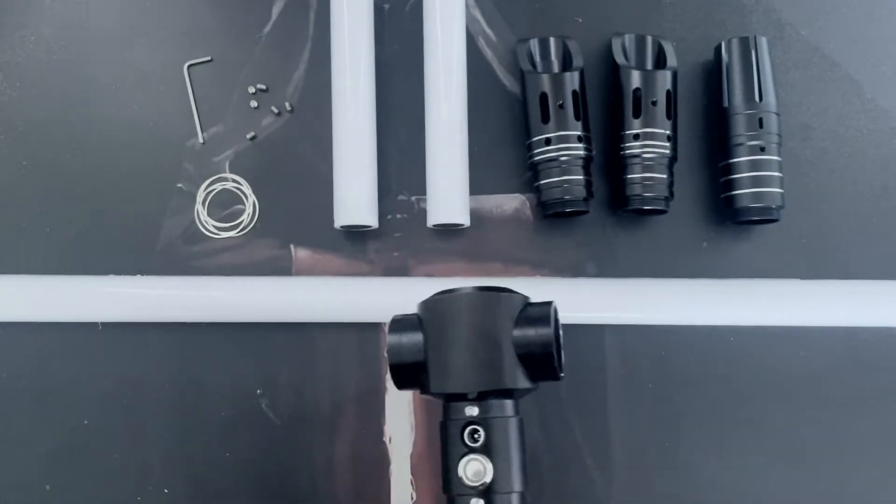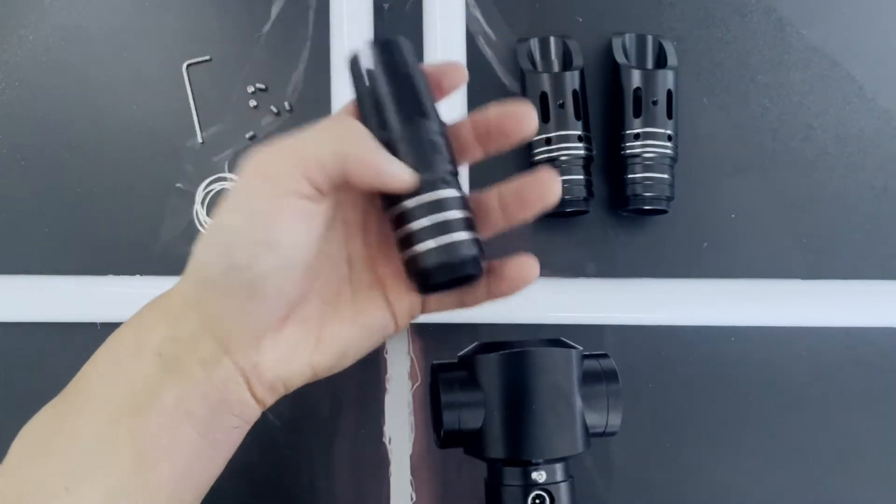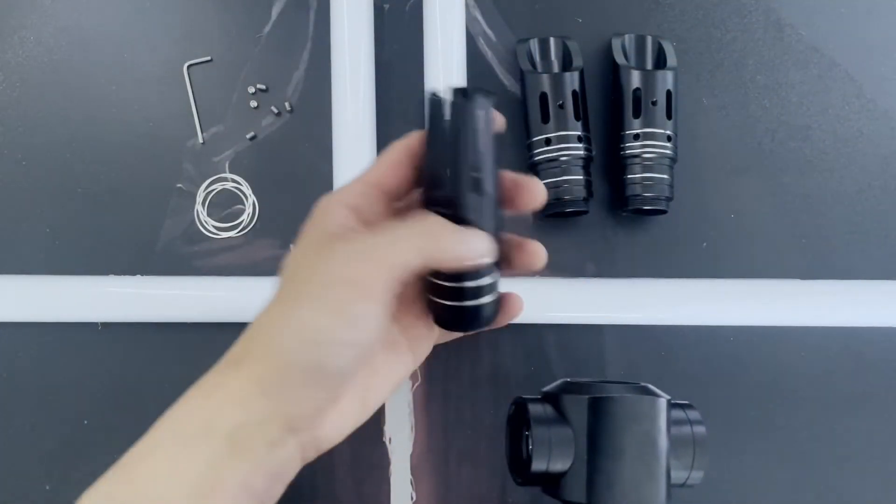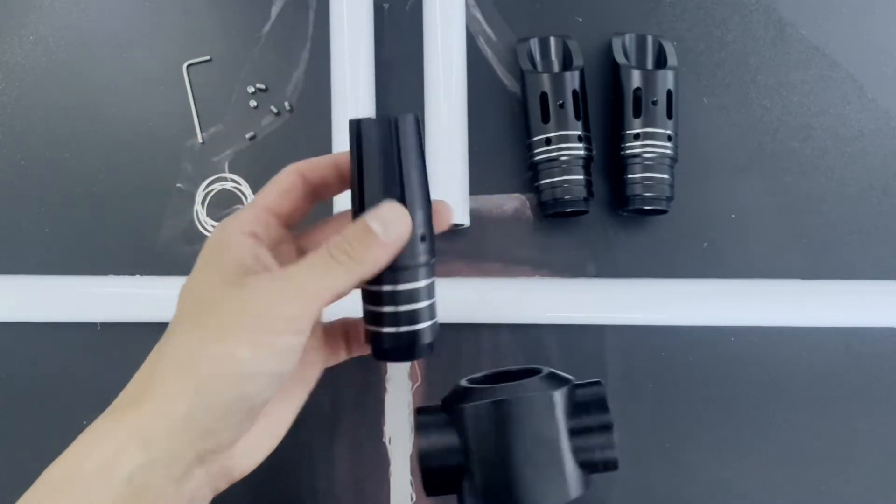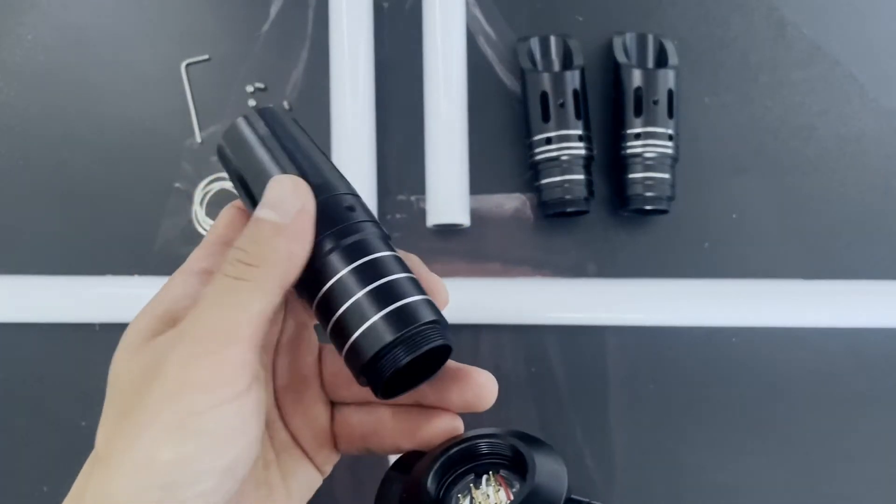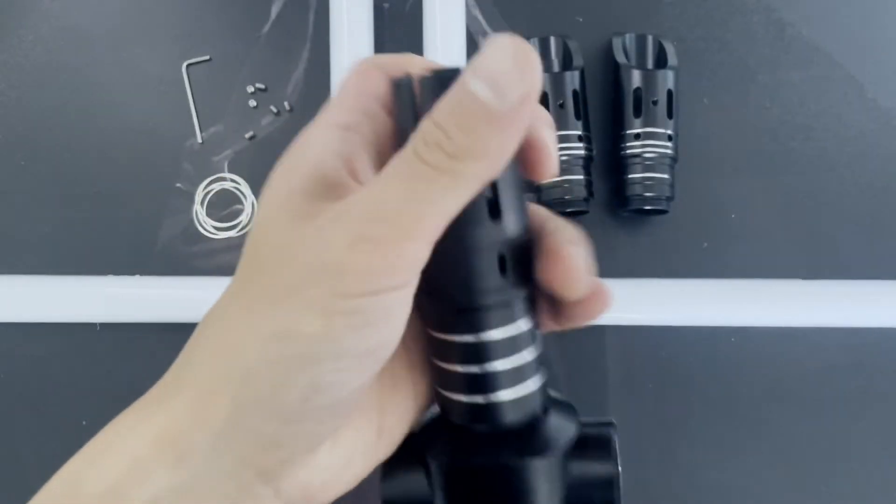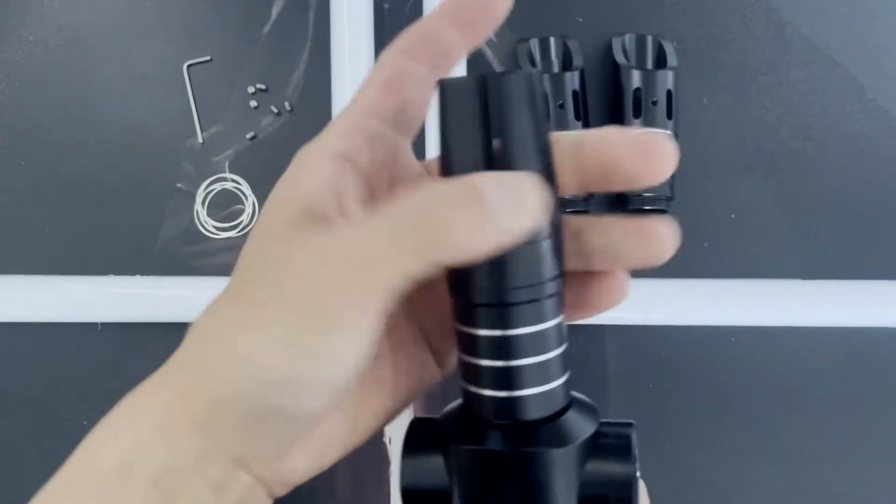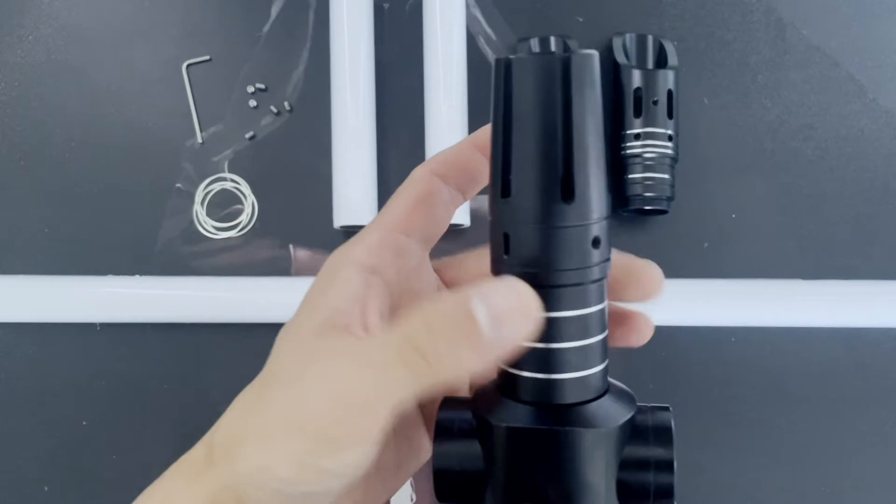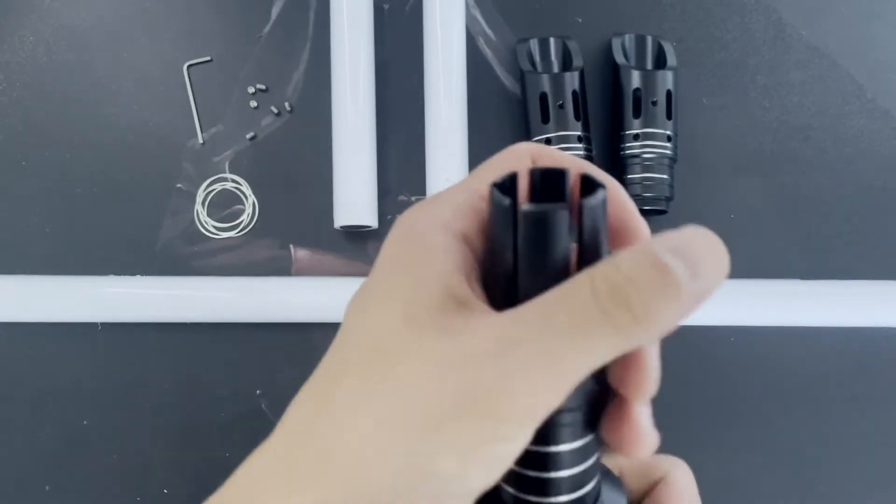When we're assembling this, we want to grab one of your emitters. There are two side emitters and one emitter for the top. Put it onto the thread and just screw it on. You should feel it start to pinch when you've got it tight. As soon as you have, just give it one good push.